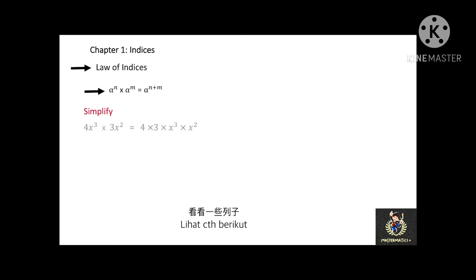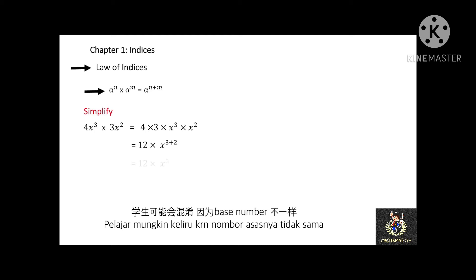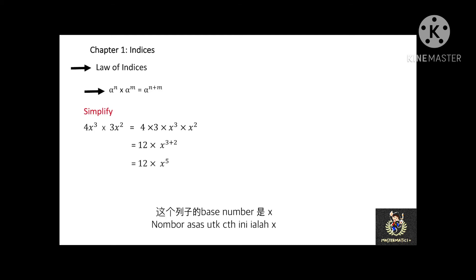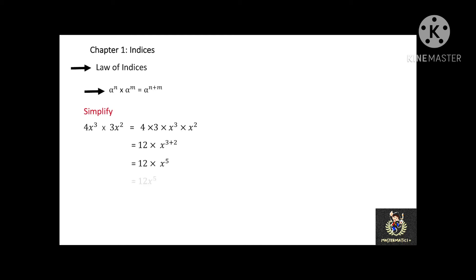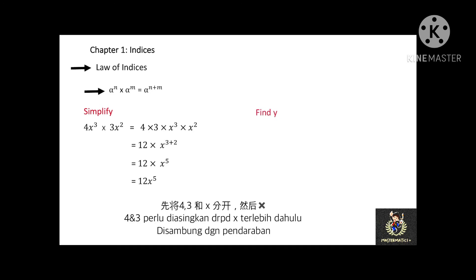Let's practice more on the law of indices. See this example: 4x to the power of 3 times 3x to the power of 2. Some of you may be confused because the base numbers appear different. In this case, the base number is actually x, and the respective indices are 3 and 2. You have to separate out the 4 and 3, giving 4 times 3 times x to the power of 3 times x to the power of 2. After rearrangement, you get 12 times x to the power of 3 plus 2, and the final answer is 12x to the power of 5.